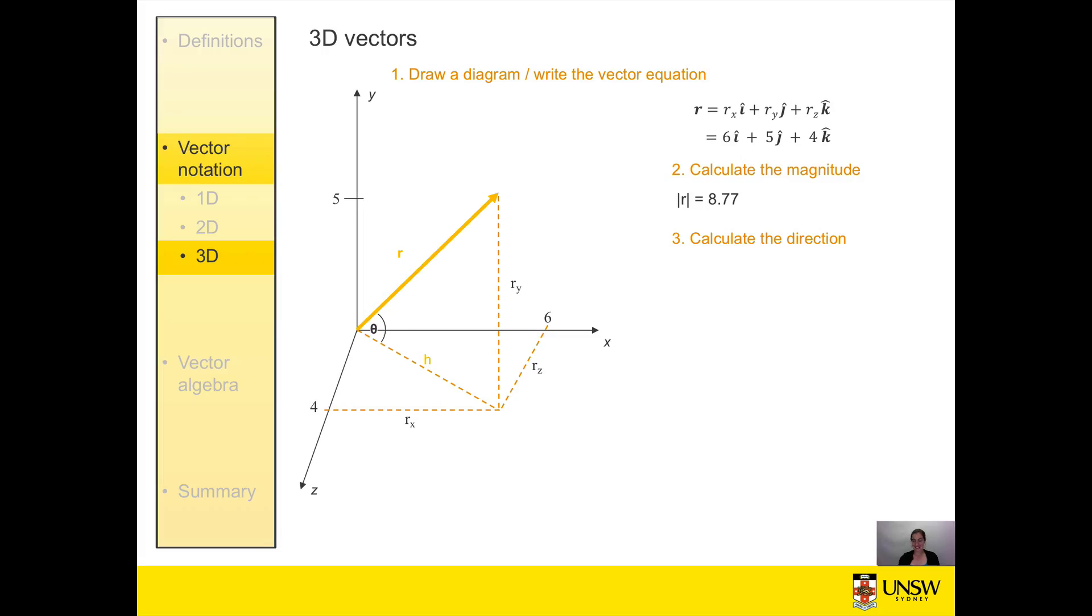Part three is calculate our direction. Once again, our direction is given by our angle theta, and we do this exactly the same as for the two dimensional case. Our vector r is part of this particular right angle triangle, so we can use any one of our trig identities. In this case I'll use the sine identity, and we find that we have a theta equal to 34.7 degrees.